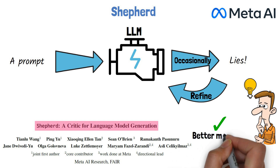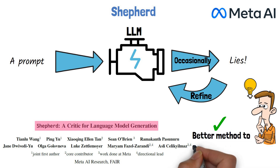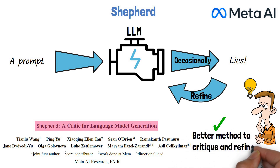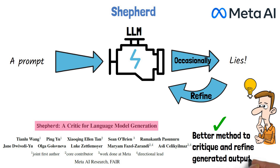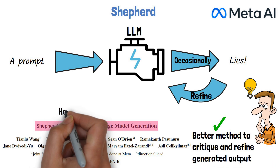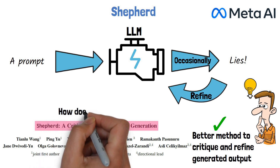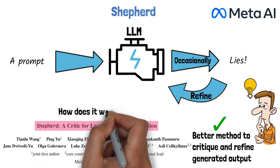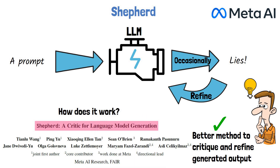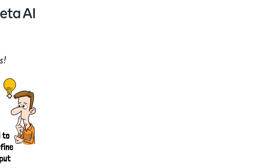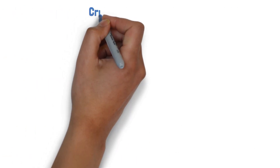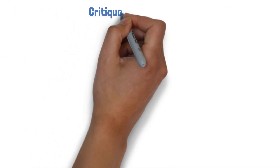The SHEPHERD paper introduces a new method to critique and refine models' outputs with higher success compared to previous methods. In this video, we will explain how it works and how the researchers were able to do that. Let's first understand what it means to critique a response from a large language model by looking at an example from the paper.